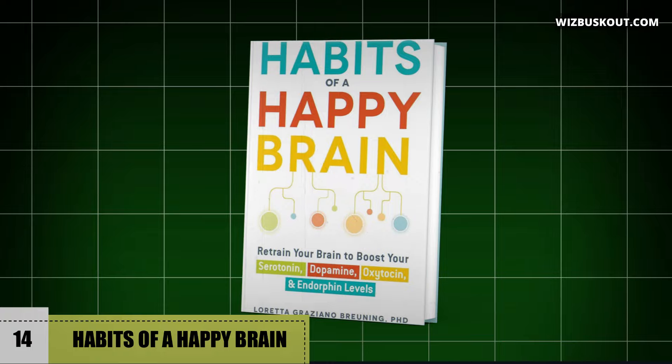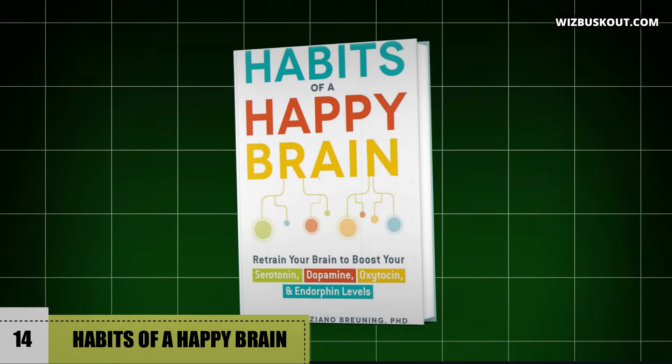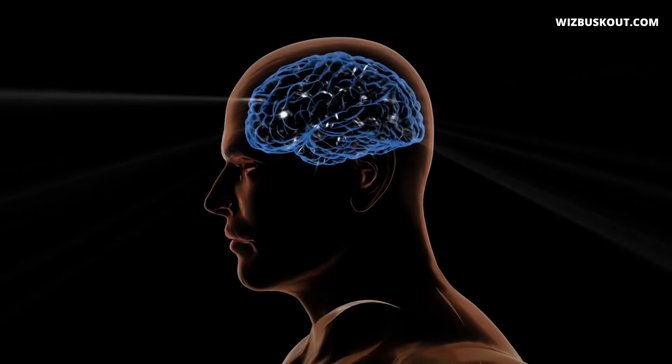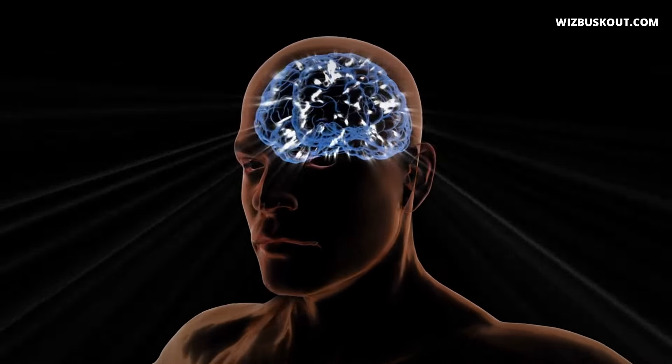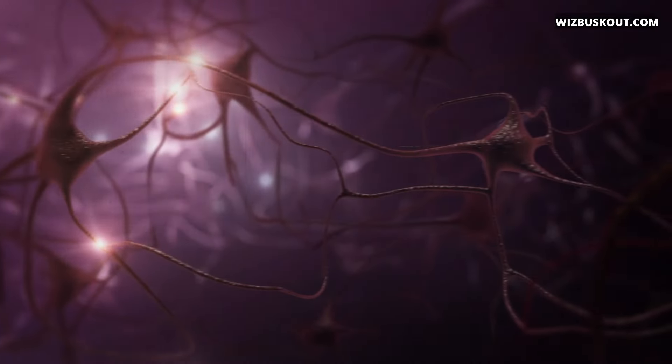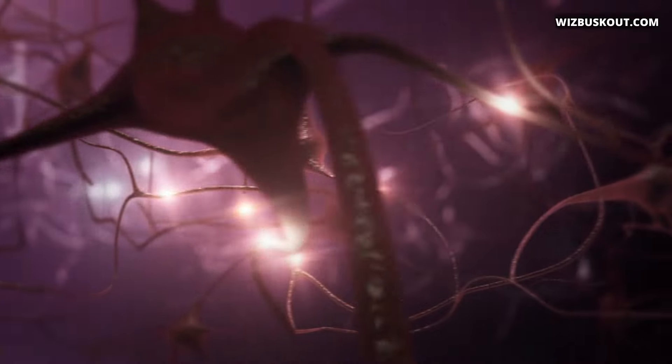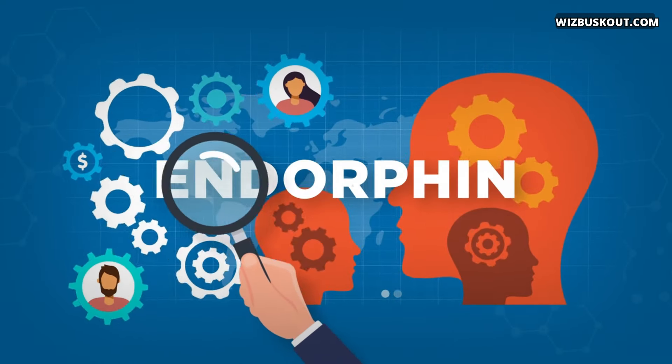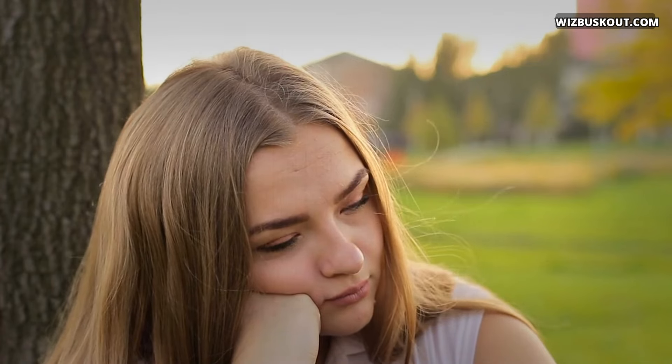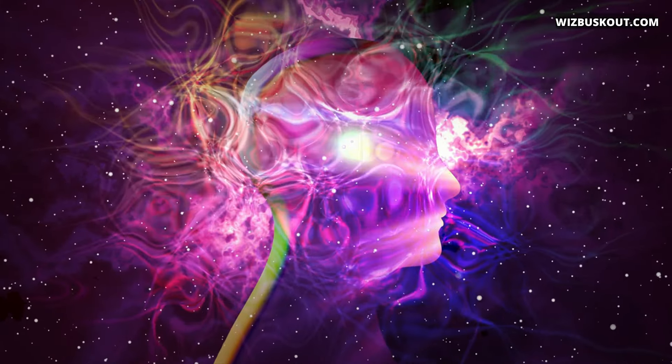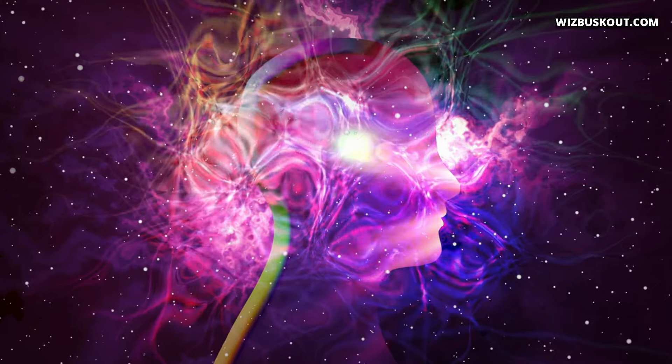Number 14, Habits of a Happy Brain by Loretta Graziano. This book explores how our brain chemistry influences our happiness and well-being. Graziano discusses the four key neurotransmitters, dopamine, serotonin, oxytocin, and endorphin, and how we can activate them to lead happier lives. She provides practical strategies and habits to help rewire our brains for greater happiness.